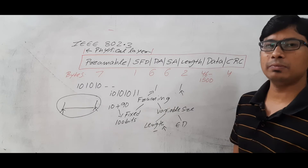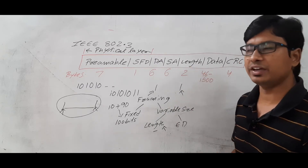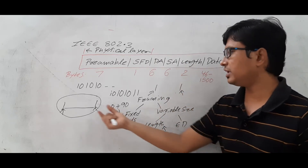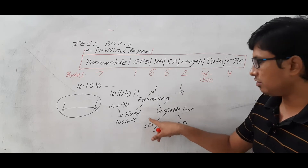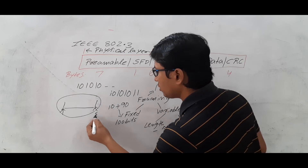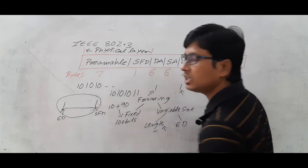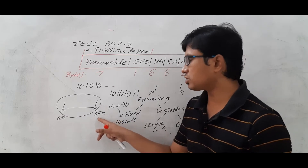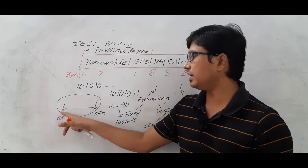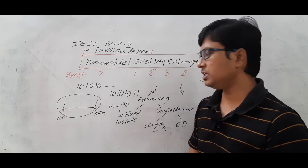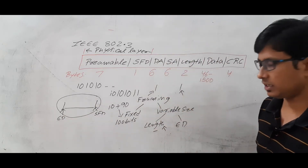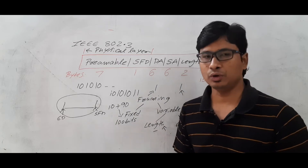But what is the problem with the length field? If the length is modified due to errors, you will get a problem. The length of the frame is used in Ethernet. The end delimiter approach uses a start frame delimiter and also an end delimiter, so you know the starting and ending of the frame. The length will be used in Ethernet and the end delimiter will be used in token ring.